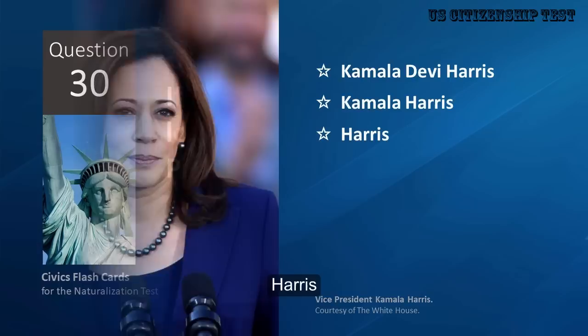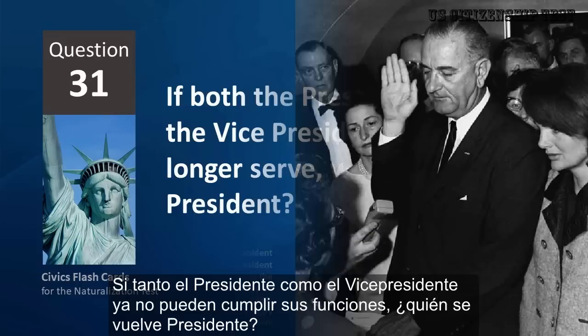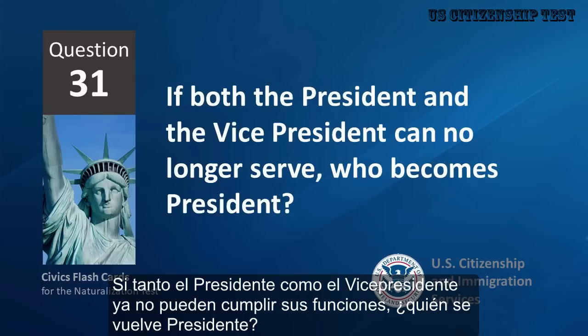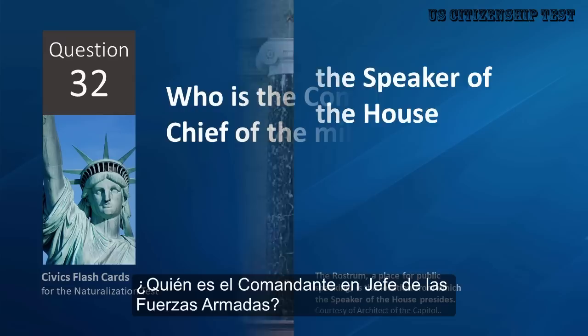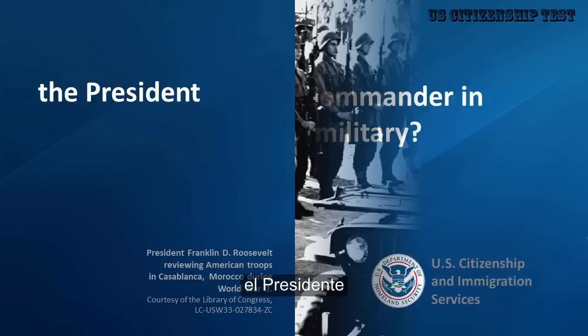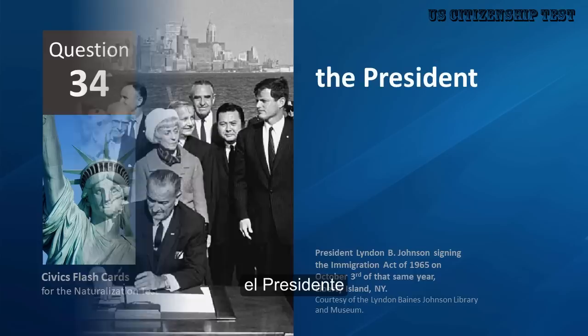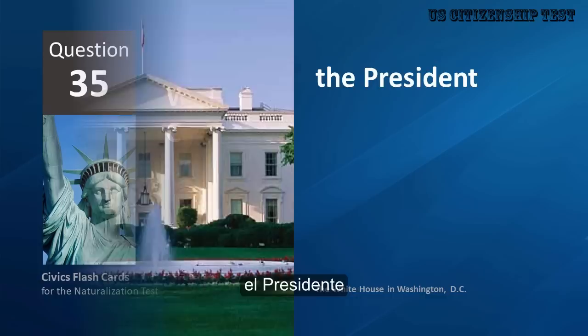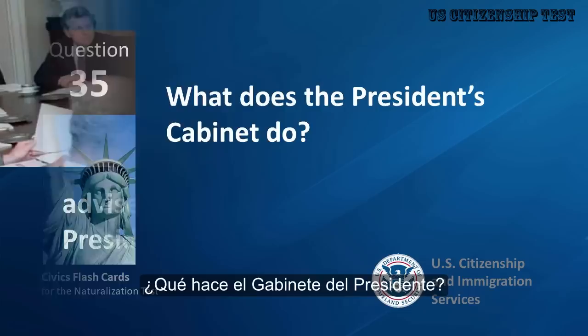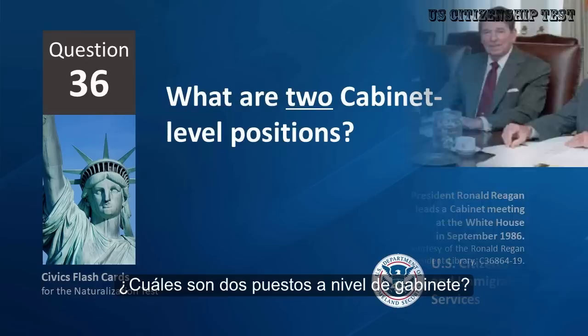If the President can no longer serve, who becomes President? The Vice President. Who is the Commander-in-Chief of the Military? The President. Who signs bills to become laws? The President. Who vetoes bills? The President. What does the President's Cabinet do? Advises the President.